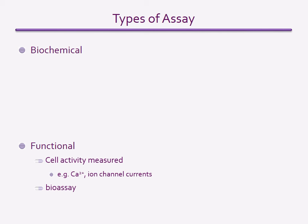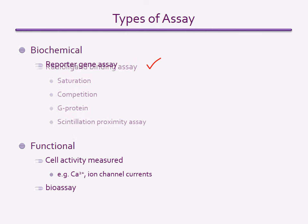A biochemical assay may employ membrane fragments or isolated enzymes. The reporter gene assay is cell-based, but rather than measuring the physiological function of a cell, it uses DNA introduced into the cell to monitor a biochemical reaction. Binding assays are another type of biochemical assay technique.